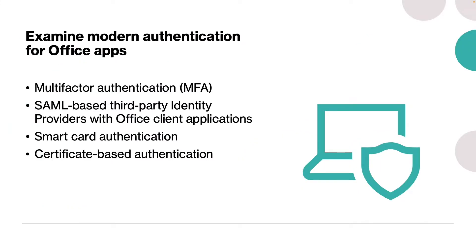The first step towards planning your identity and authentication solution for Microsoft 365 is to examine modern authentication for your Office 365 applications. Modern authentication is a Microsoft solution based on Microsoft Authentication Library, known as MSAL. It applies the open authentication or OAuth standard when an application or client software tries to obtain access tokens from an authentication provider to access resources.